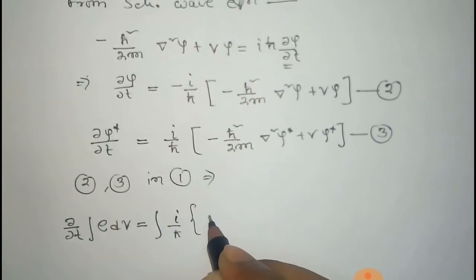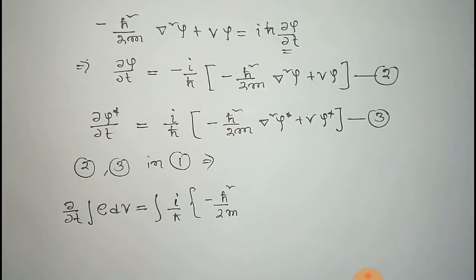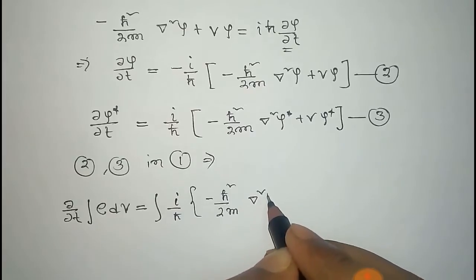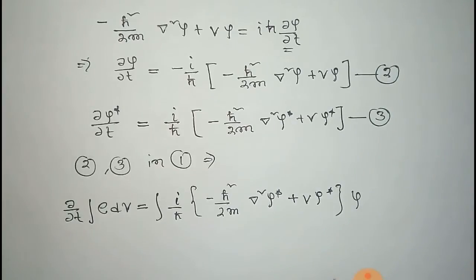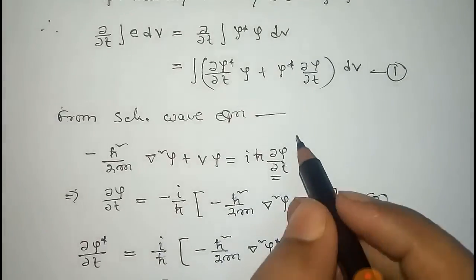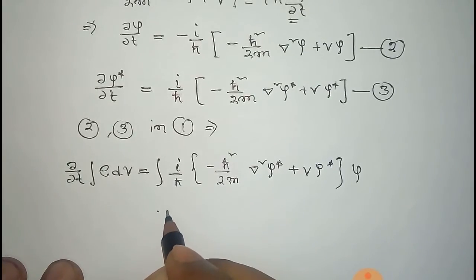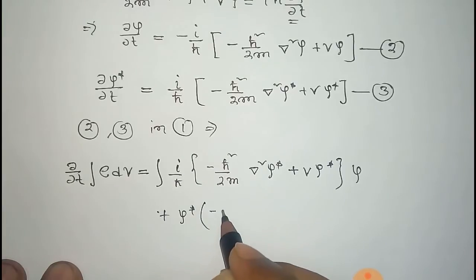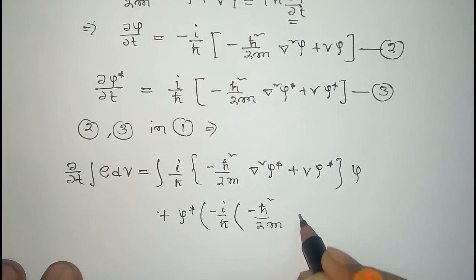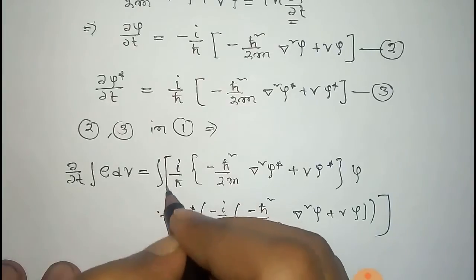Substituting, the value of ∂ψ*/∂t gives (−i/ℏ)[(−ℏ²/2m)∇²ψ* + Vψ*] times ψ, plus ψ* times the value of ∂ψ/∂t, which is (i/ℏ)[(−ℏ²/2m)∇²ψ + Vψ], times ψ*, all inside dV.